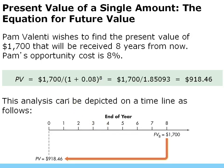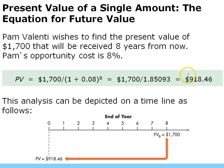Present value of a single sum example: we want to find the present value of $1,700 to be received eight years from now, and the opportunity cost (discount rate) is 8%. The formula would be: $1,700 ÷ (1.08)^8 = $917. So receiving $1,700 eight years from now is the same as receiving $918 today. On the timeline, the future value eight years out is $1,700 and today's equivalent is $918.